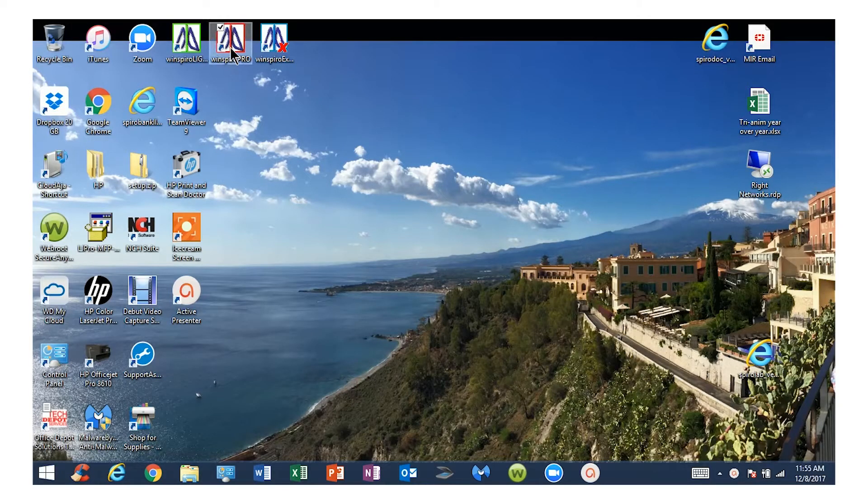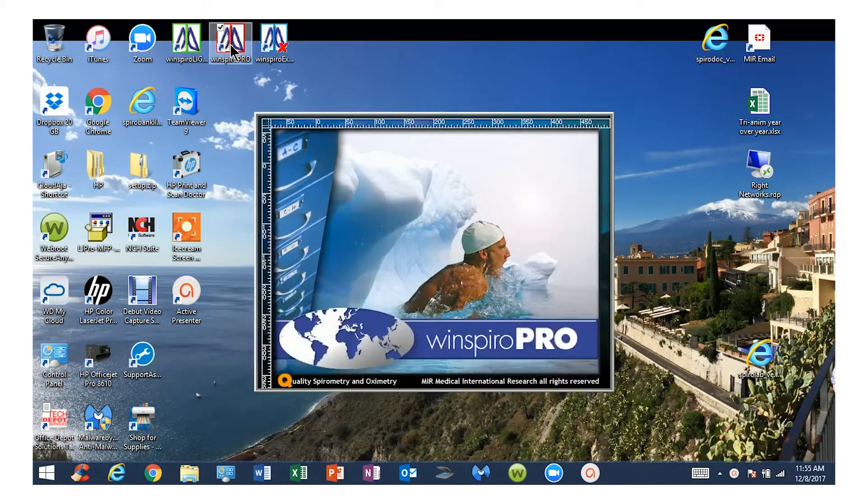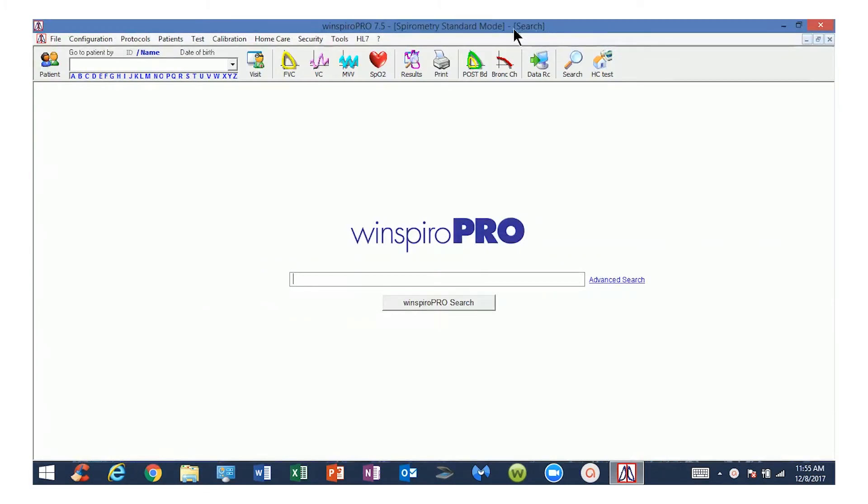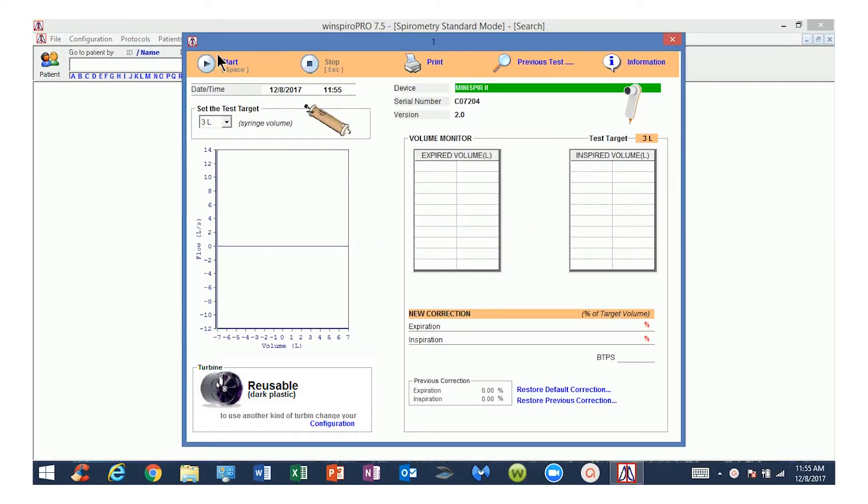Now that you have everything connected, open WinSpyro Pro on your computer. Select the calibration drop-down list at the top of the screen. From the calibration drop-down list, select Perform Calibration Test. This will open the calibration test screen.